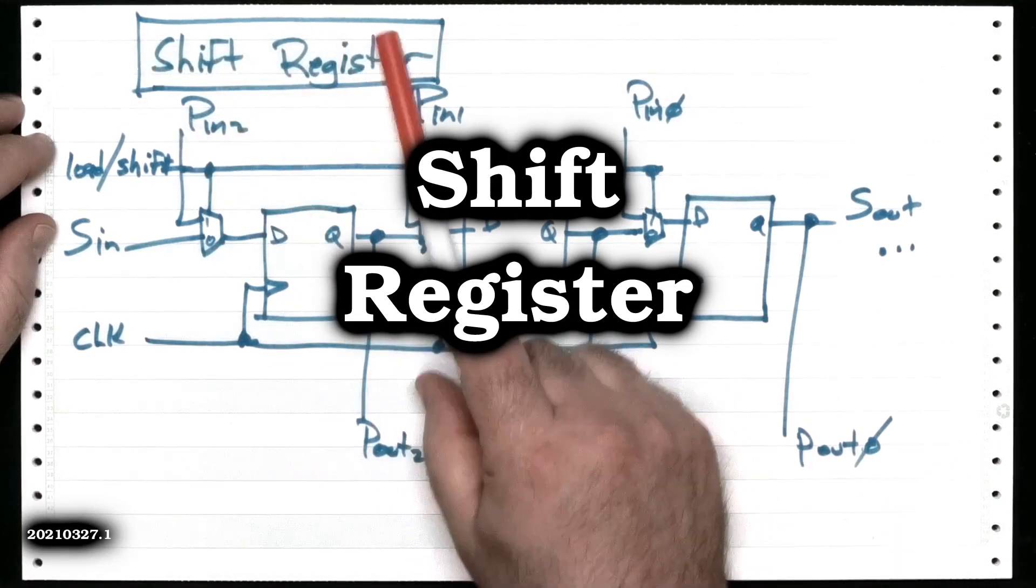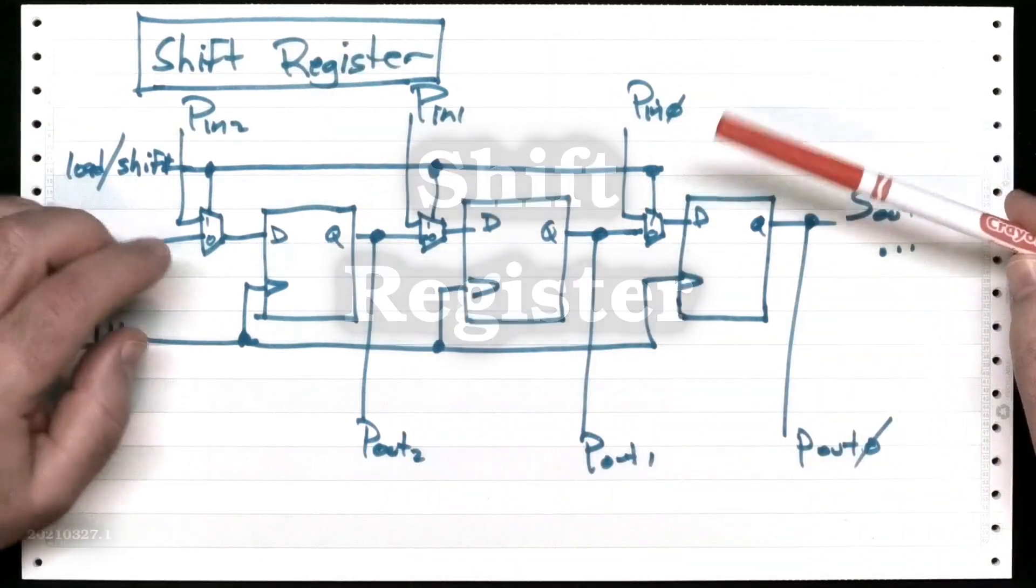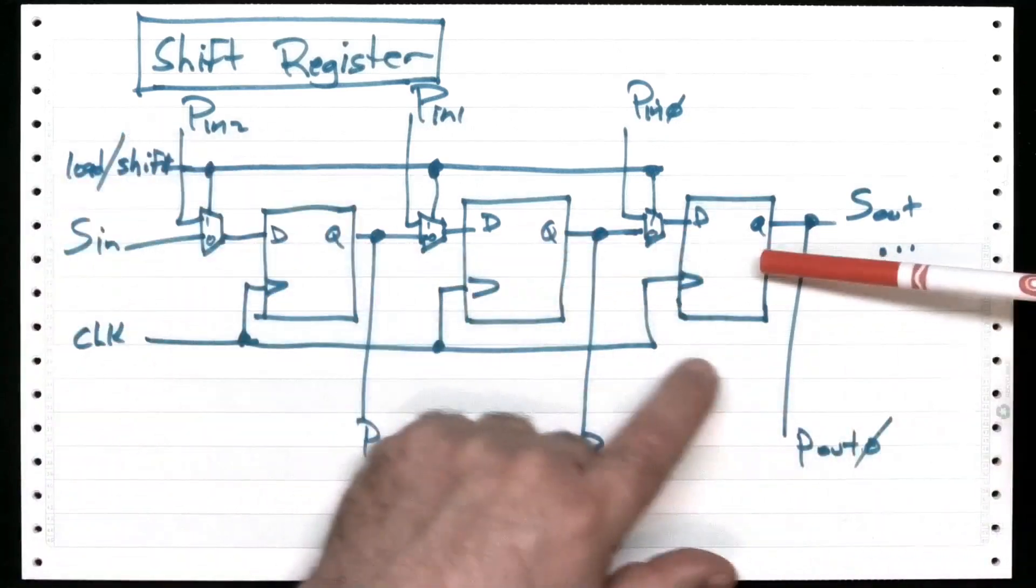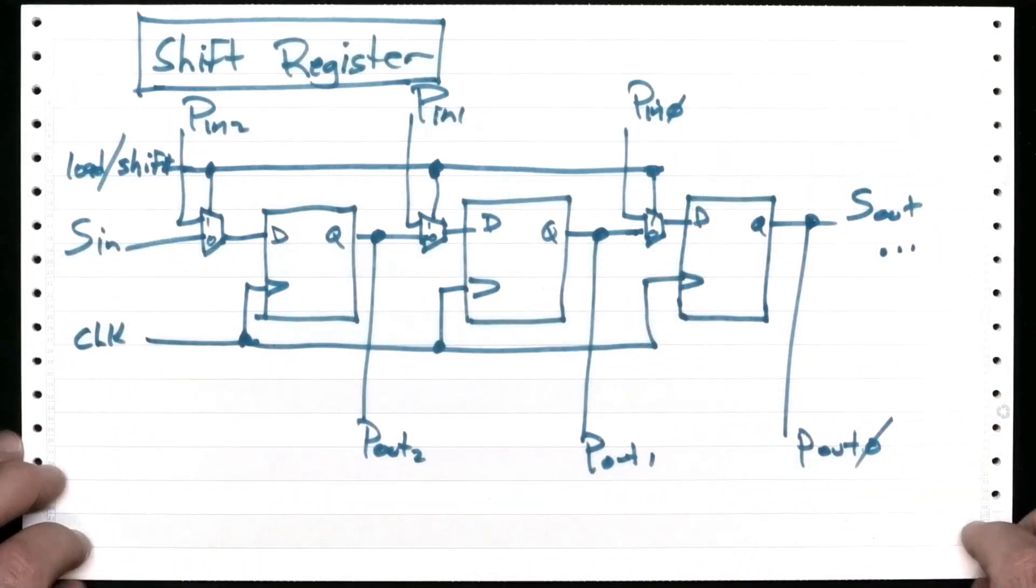Hey, John here. Let's look at this thing called a shift register. A shift register is a regular old D-latch, as you can see by all these D-latches. You have a multi-bit D-latch. Here's a three-bit shift register.